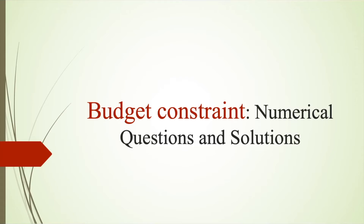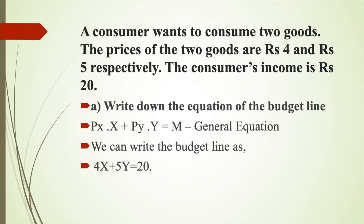Today let's have a look at the numerical questions on budget constraint. We'll look at the first one. A consumer wants to consume two goods. The prices of the two goods are Rs 4 and Rs 5 respectively, and the consumer's income is Rs 20.